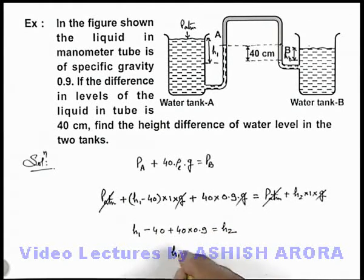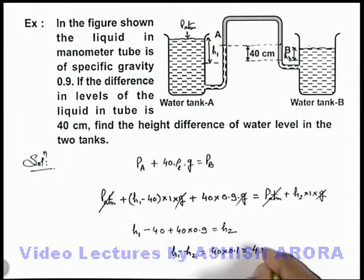So here, h1 minus h2 can be written as 40 multiplied by 0.1, that is 4 centimeters. That will be the answer to this problem.